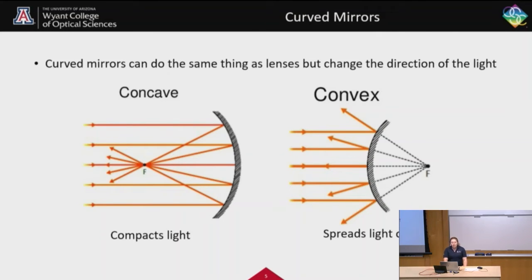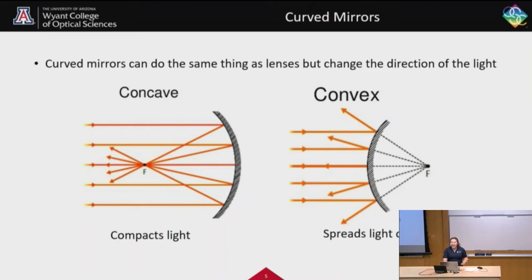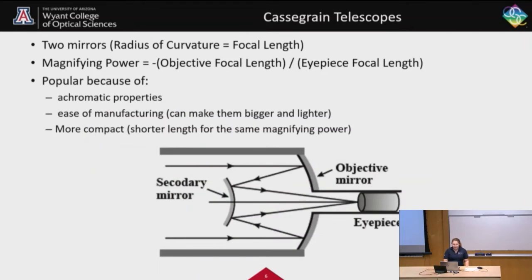Another way to make a telescope is by combining curved mirrors, which can do the same job as a lens but change the direction of the light. A concave mirror is like a positive lens, and a convex mirror is like a negative lens, spreading the light out. The Cassegrain telescope is one of the simplest mirror telescopes, using two curved mirrors with the same magnifying power definition. They're popular for their achromatic properties, ease of manufacturing at larger sizes, and their compact design.